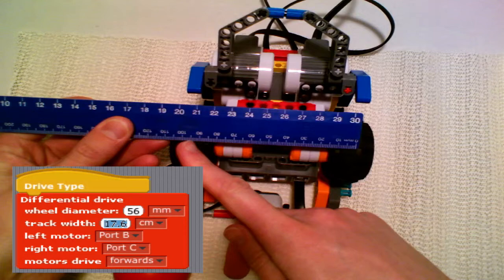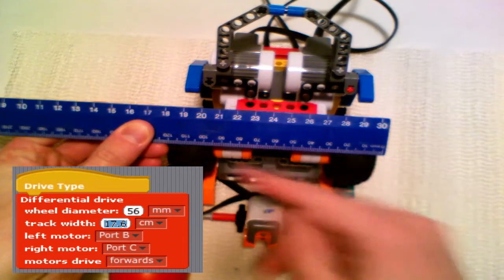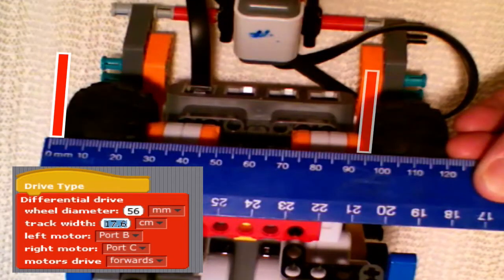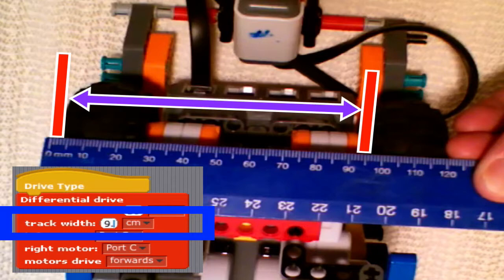It's the same thing if you shift it over slightly and measure from the left side of the left wheel to the left side of the right wheel, or any point to that same point on the other wheel. Measuring here, this looks to be about 9.4 centimeters.